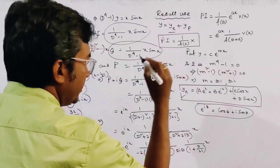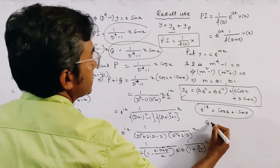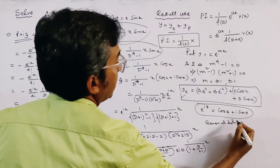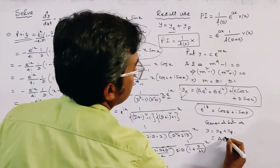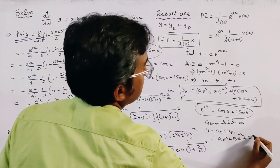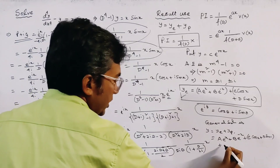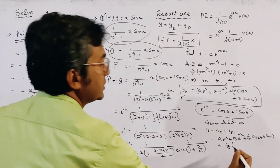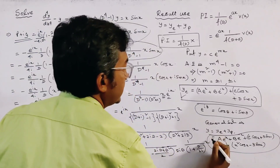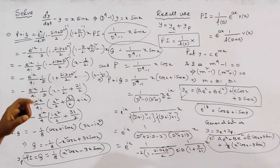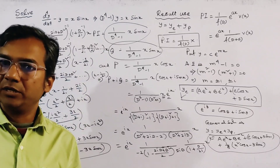The general solution is y = yc + yp. Substituting both parts: y = a·e^x + b·e^(−x) + c·cos(x) + d·sin(x) + (1/8)[x^2·cos(x) − 3x·sin(x)]. This is the final general solution of this non-homogeneous linear differential equation with constant coefficients. Thank you for watching.